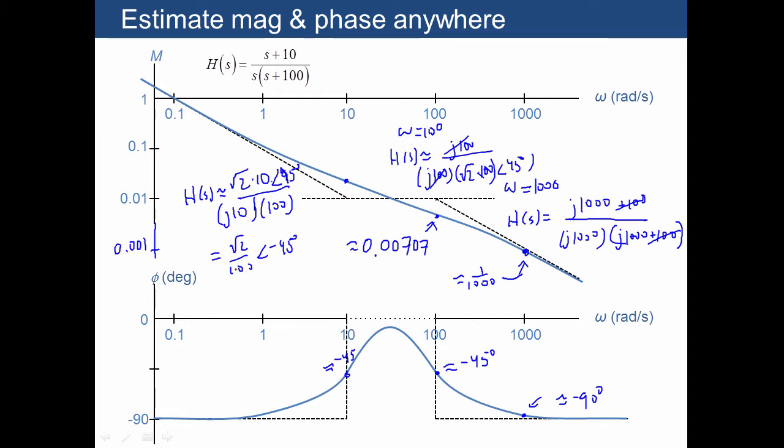Over here, we want square root of 2 divided by 100, in other words 0.0141, which is plus 3 dB from the 0.01 part.